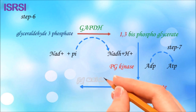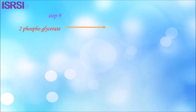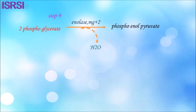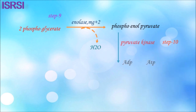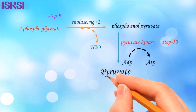In step 8, the enzyme phosphoglycerate mutase converts 3-phosphoglycerate into 2-phosphoglycerate. In step 9, 2-phosphoglycerate is converted into phosphoenolpyruvate by the enzyme enolase in the presence of magnesium²⁺ ions, releasing a water molecule. In step 10, phosphoenolpyruvate is converted into pyruvate, and ADP is converted into ATP by substrate-level phosphorylation via the enzyme pyruvate kinase.